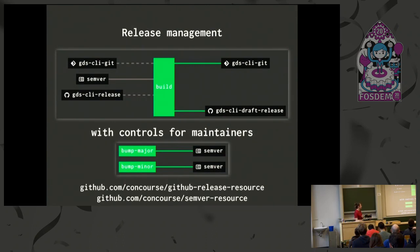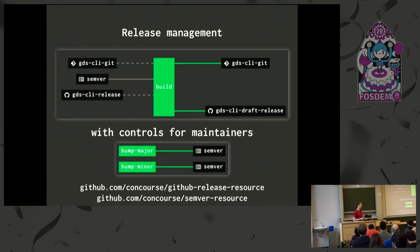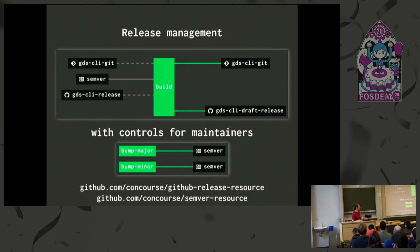For release management, we use two resources: the semver resource, which knows about a semantic version and lets you put to it with patch, minor, or major to bump the version; and the GitHub Release resource, because we host release artifacts on GitHub for our CLI tool. This looks at all commits since the last release and generates release notes automatically. All we have to do is go into GitHub, maybe write some thanks to contributors, and click Publish instead of Publish Draft.